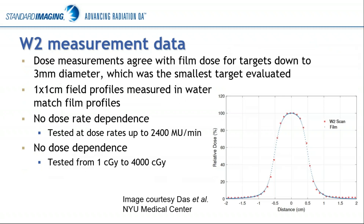You can also do point dose measurements — either for output factor measurements or directly measuring point dose. We've had people do it for patient-specific QA measurements for SRS treatments in a phantom like our Lucy phantom. A paper from Richard Popple's group at the University of Alabama Birmingham looked at dose measurements for stereotactic targets down to three millimeter diameter and compared their results with film, getting excellent agreement with the W2. A publication from Indra Das's group at NYU Langone also compared the W2 with film for small field scanning and looked at dose rate and dose dependence, with results behaving the same as the W1.